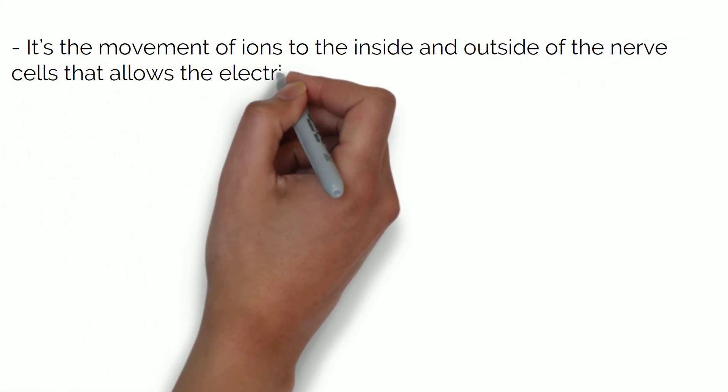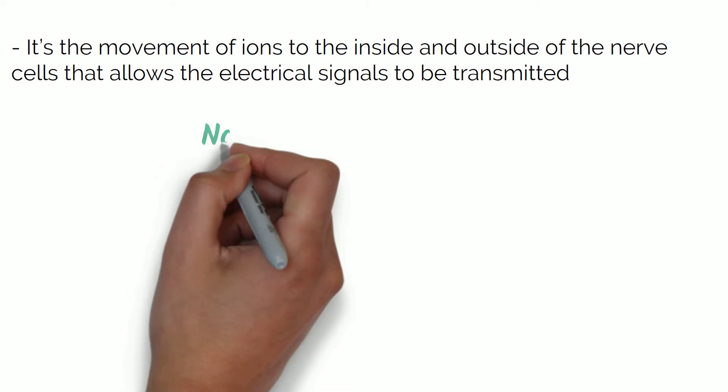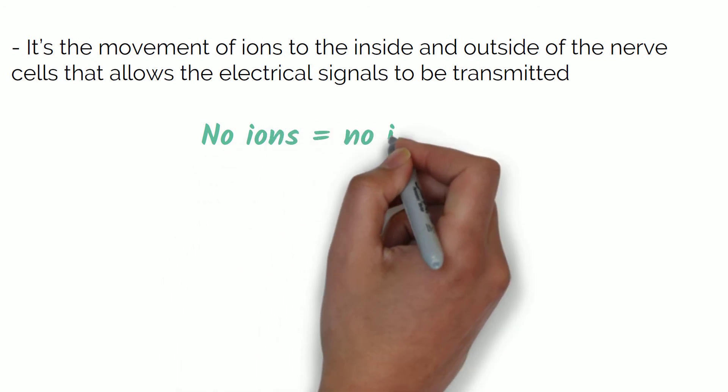It's the movement of ions to the inside and outside of the nerve cells that allows the electrical signals to be transmitted. So a bit like a slot machine, you need to keep putting coins in so you can keep playing. Otherwise it just sits there. If neurons don't have ions flowing in and out of them, then the impulses are not transmitted.